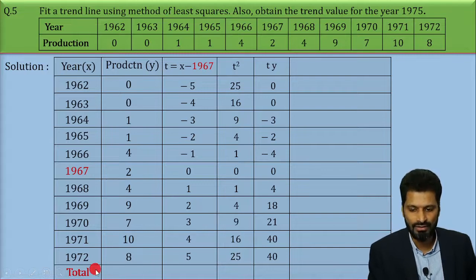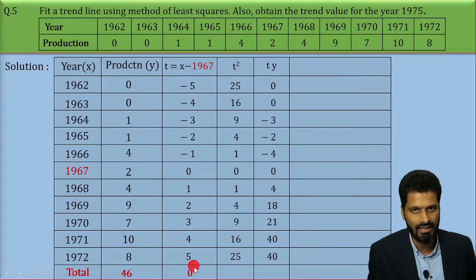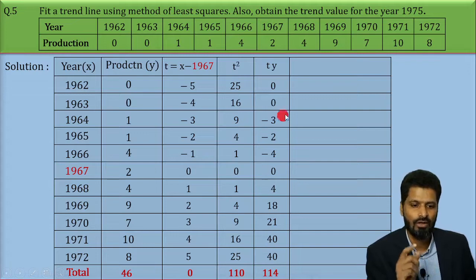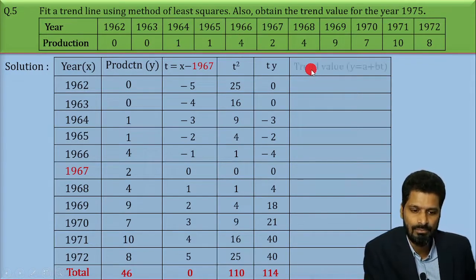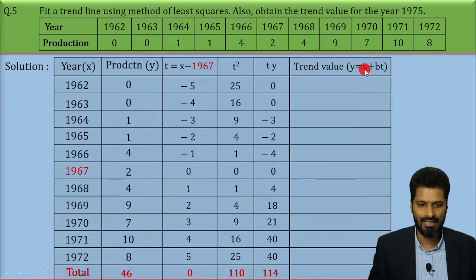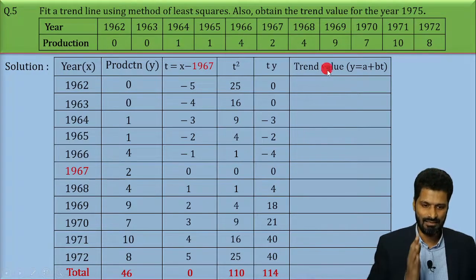After these columns, we find the totals of all values. Sum of y = 46, sum of t = 0, sum of t squared = 110, and sum of ty = 114. The last column is meant for trend values given by y = a + bt. The problem is we don't yet know a and b, so we cannot fill this column until we calculate those values. Step 1 is now complete except for this last column.